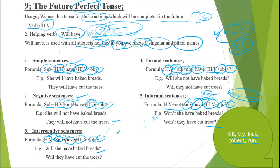First verb is 'kill.' Practice: You kill a bird. You do not kill a bird. Do you kill a bird? Do you not kill a bird? Don't you kill a bird? You killed a bird. You did not kill a bird. Did you kill a bird? Did you not kill a bird? You will kill a bird. You will not kill a bird. Will you kill a bird? Won't you kill a bird? You are killing a bird. You are not killing a bird. Are you killing a bird? Aren't you killing a bird? You were killing a bird. Were you killing a bird? Weren't you killing a bird? Will you be killing a bird? Won't you be killing a bird? You have killed a bird. You have not killed a bird. Have you killed a bird? Haven't you killed a bird? You had killed a bird. You had not killed a bird. Had you killed a bird? Hadn't you killed a bird? You will have killed a bird. You will not have killed a bird. Will you have killed a bird? Will you not have killed a bird? Won't you have killed a bird?